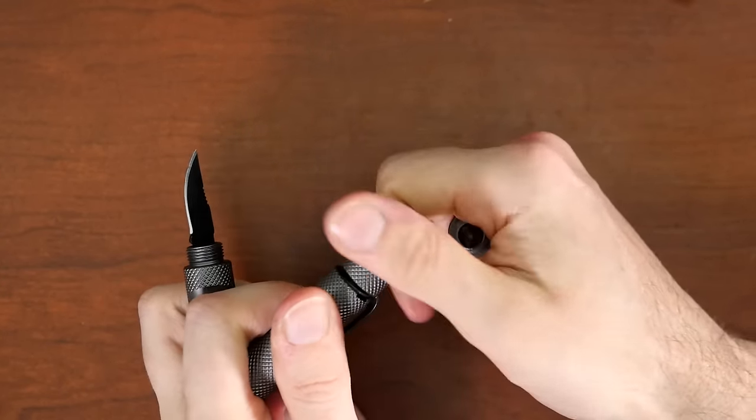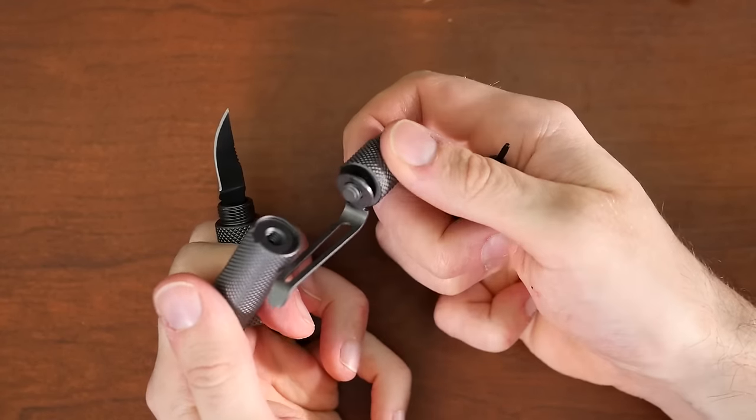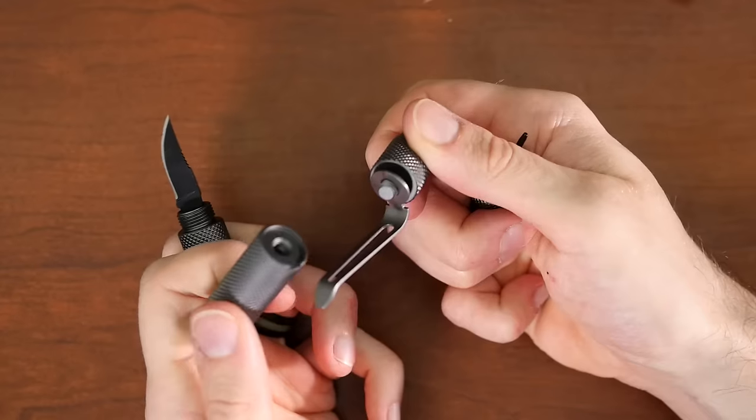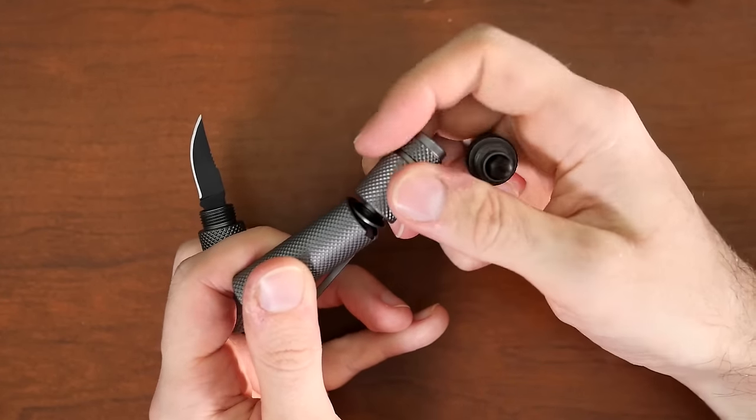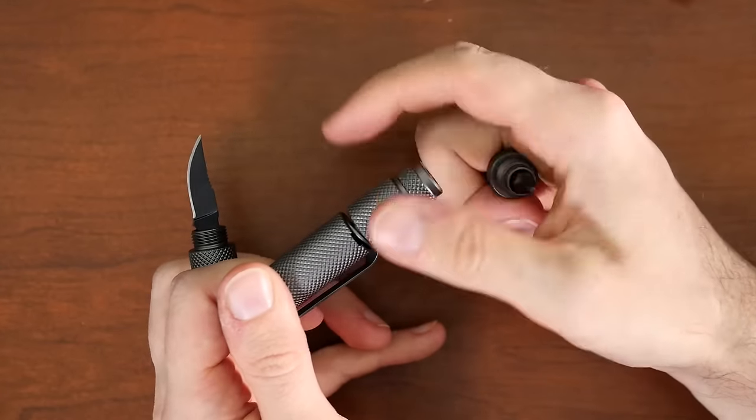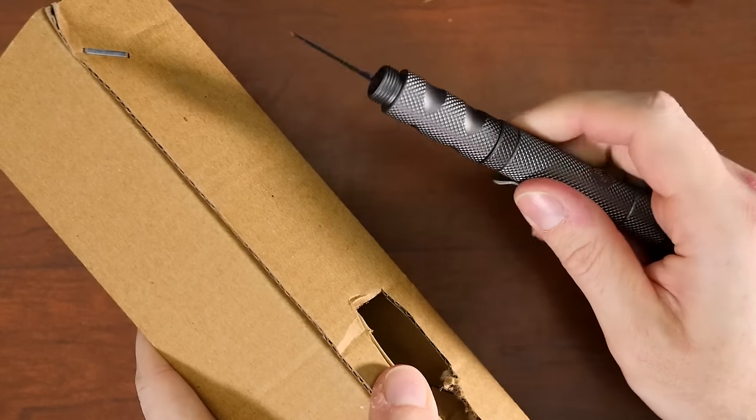If I unscrew this part here, that's how you can take off the belt clip. And there's just a thin thread in there. So that doesn't work for it. And up there behind the flashlight, that's where the batteries are.